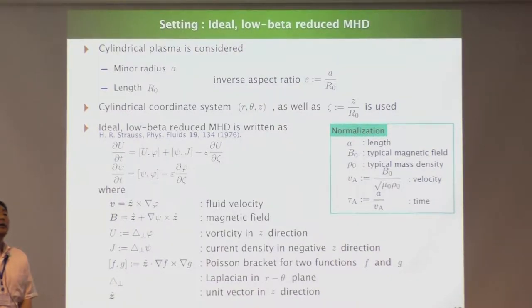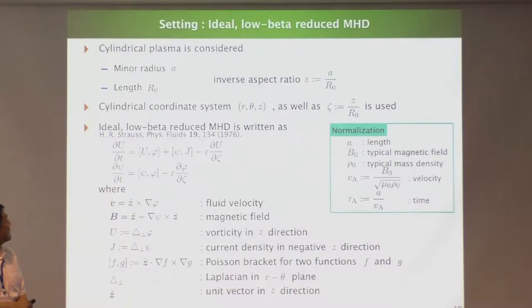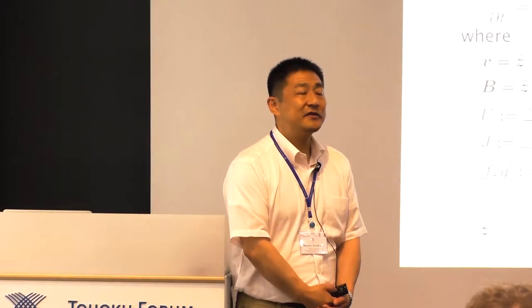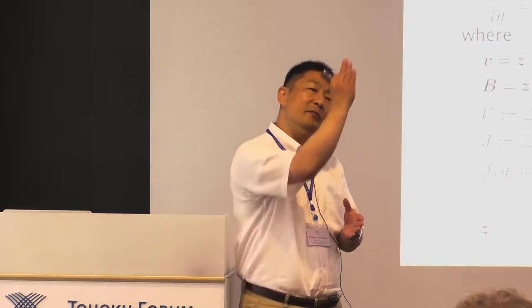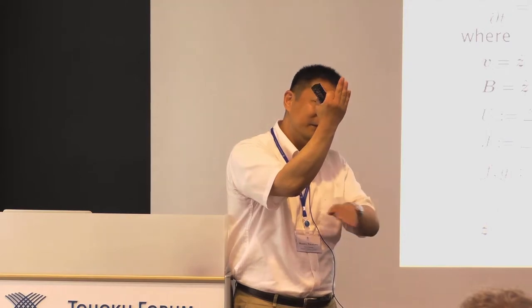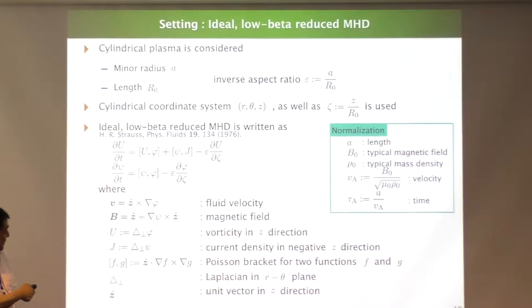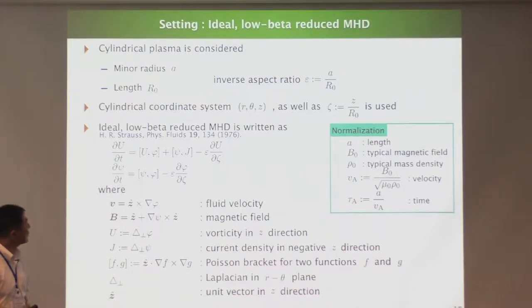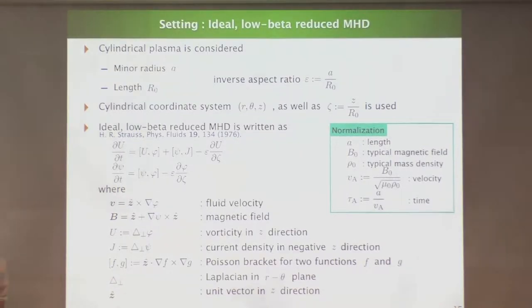In the following I am using the so-called low-beta reduced MHD. Low-beta means low pressure, so pressure is dropped. Reduced means this is greatly reduced from the original MHD. We assume a strong magnetic field and the motion of the plasma fluid occurs on the plane perpendicular to the strong magnetic field. This is the vorticity equation — U is the vorticity — and this is Ohm's law along the magnetic field line. This is a two-variable system.